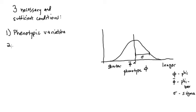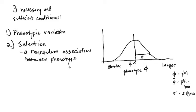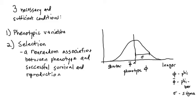The second condition is basically described by the word selection. The condition is that there has to be a non-random association between phenotype and successful survival and reproduction. Based on Malthus's essay on the Principle of Population, Darwin concluded that only a fraction of individuals born into any generation actually make it to maturity and successfully reproduce. This condition requires that survival and reproduction is not random — knowing the phenotype of an individual gives you information about that individual's chances of successfully being a parent to the next generation.